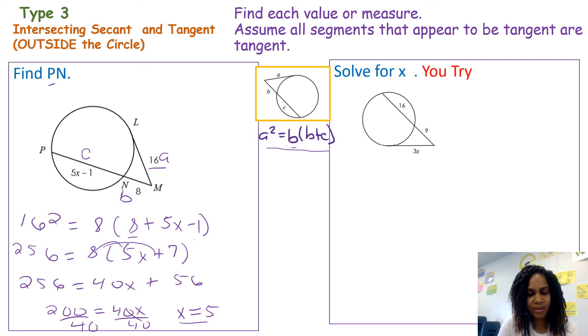I'm not done because it asked me to find PN. PN is here, the 5x minus 1. So I'm going to plug it in. X is 5, so 5 times 5 minus 1 equals 25 minus 1. That would give me 24. So PN equals 24.